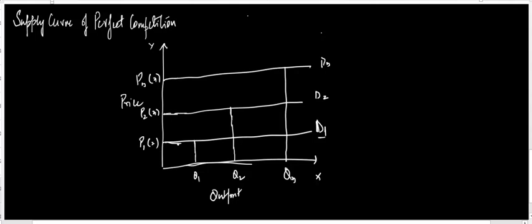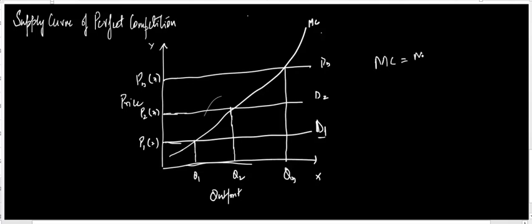The firm supplies these quantities because I'll drop a marginal cost curve here — its marginal cost equals its marginal revenue at each point. At Q1, marginal cost equals marginal revenue; at Q2, marginal cost equals marginal revenue; and at Q3, marginal cost equals marginal revenue. Therefore, the marginal cost curve has an identical shape to the supply curve, making it the supply curve in perfect competition.